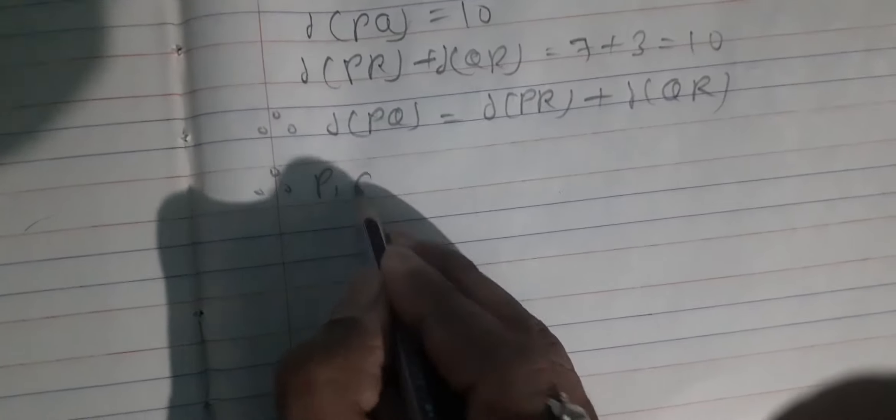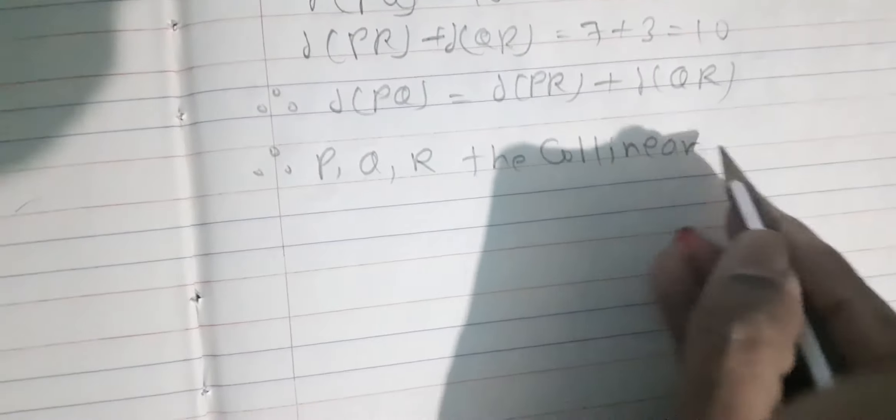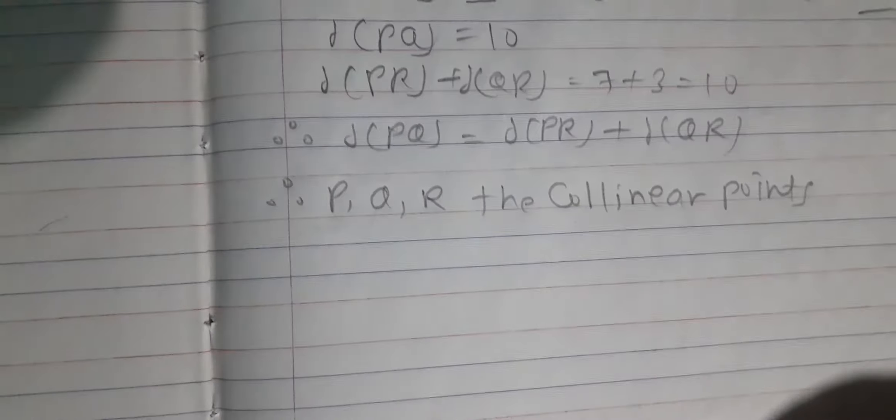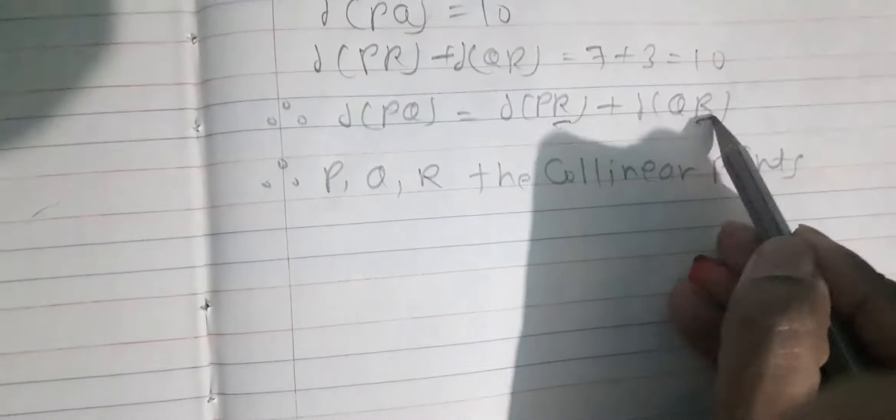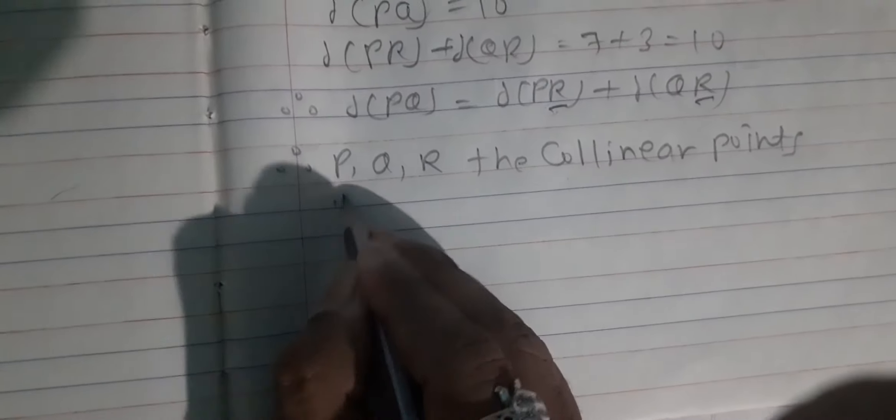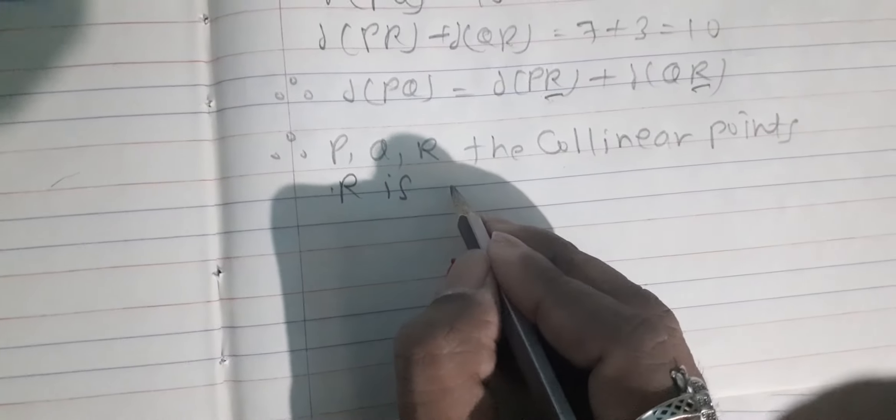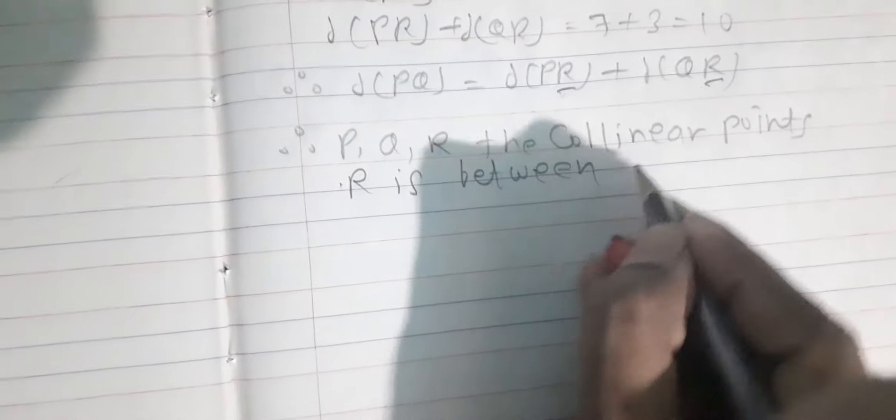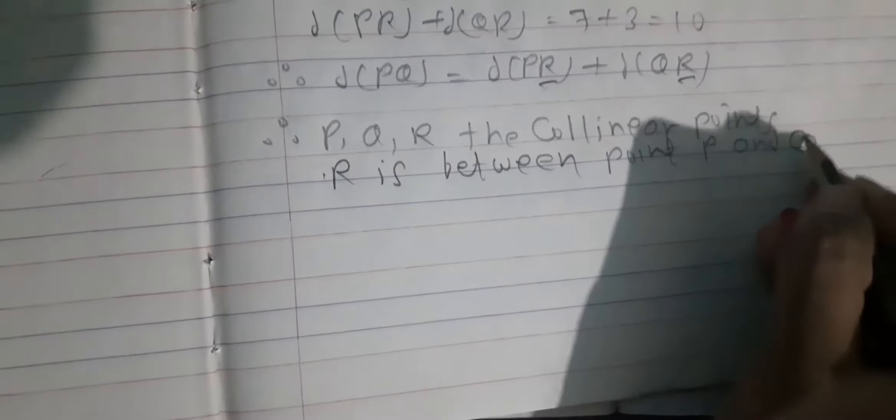Therefore, distance PQ is equal to distance PR plus distance QR. Therefore P, Q, R are collinear points. And among them the common point is R. R is between point P and Q.